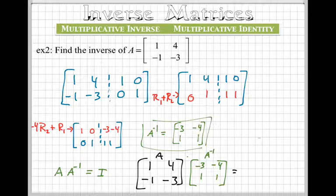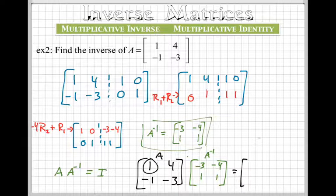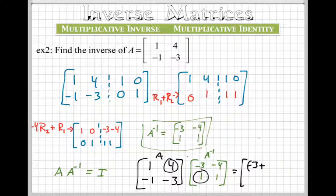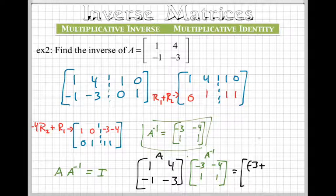So we go 1 times negative 3, which would be negative 3, and we're going to add that to 4 times 1. So we get 4.